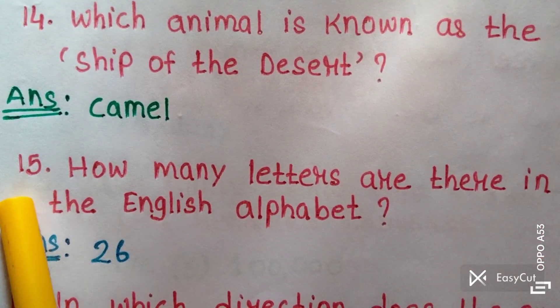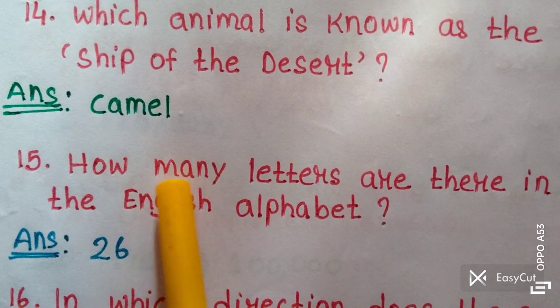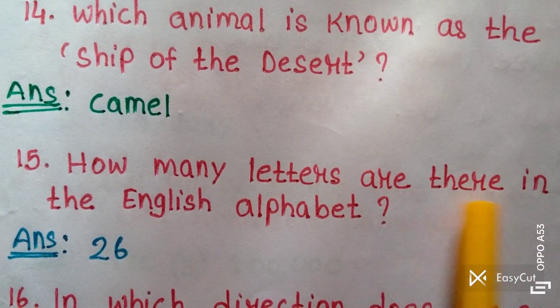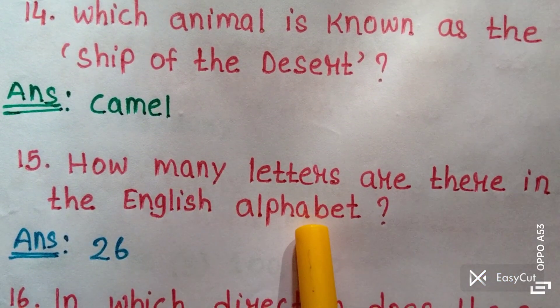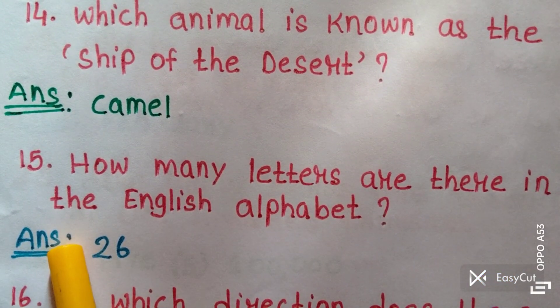Question fifteen: How many letters are there in the English alphabet? Answer: 26.